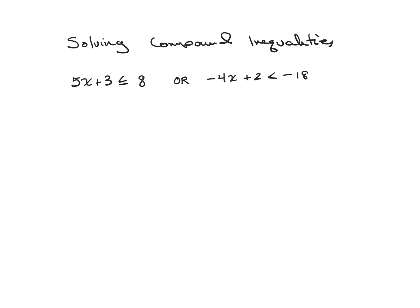So the first one here is just two inequalities that are separated by the word OR. We're going to solve them and then get to graphs. When solving these, they're solved the same way as if they were equations — you solve each one like its own equation, and then combine their answers through the word OR onto a single graph.